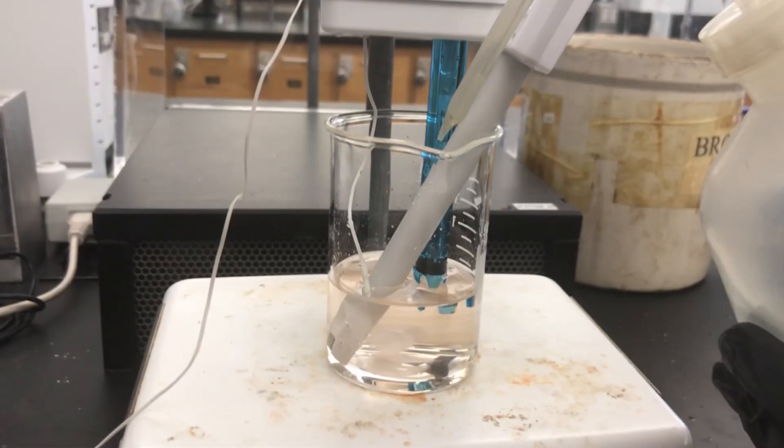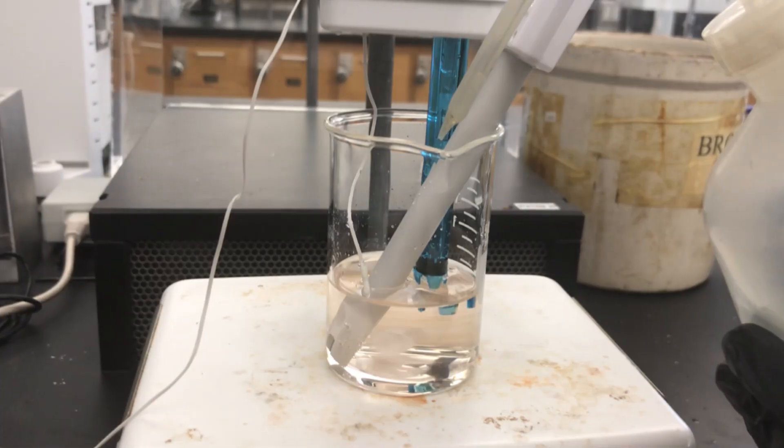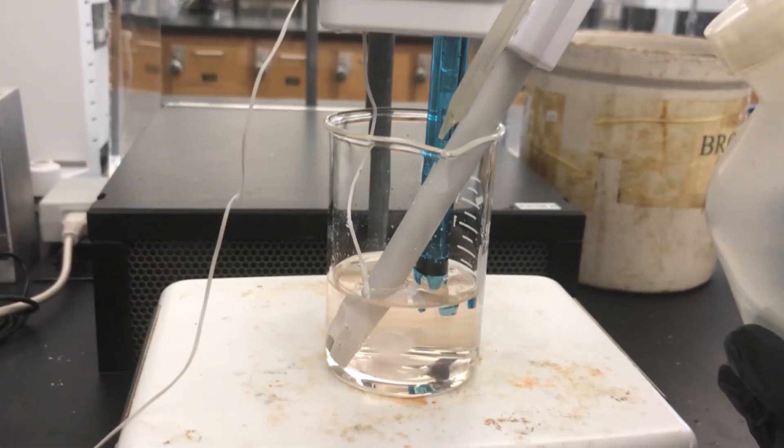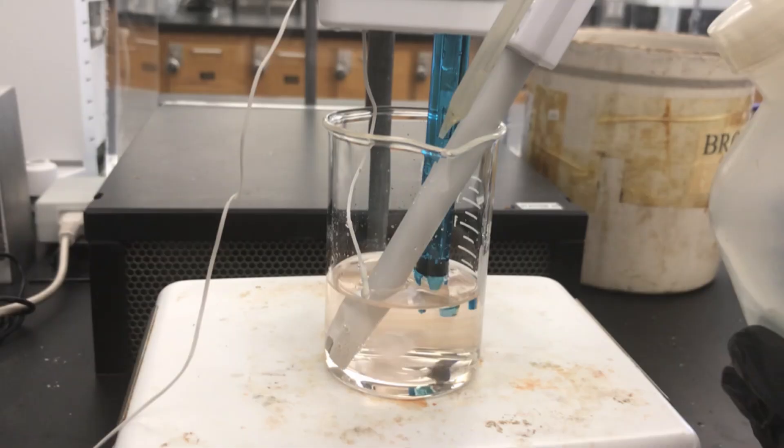Then add enough distilled water to cover the glass bulb on the pH meter. Once all of the probes are in place, turn on the stir plate and double check that the stir bar can spin freely without hitting any of the sensors. If necessary, adjust the sensors to be higher.